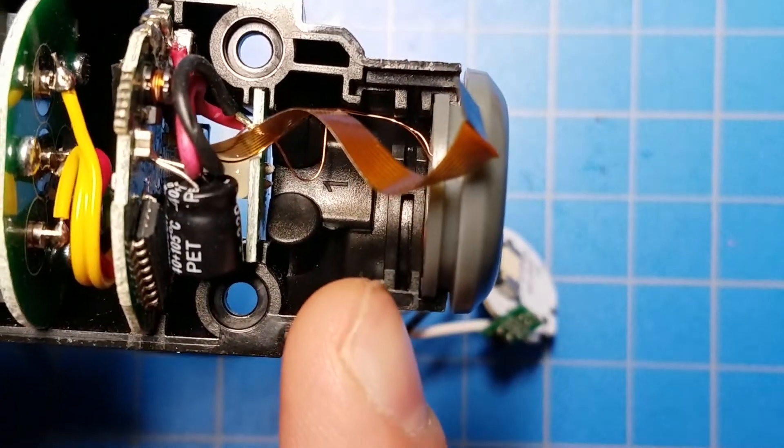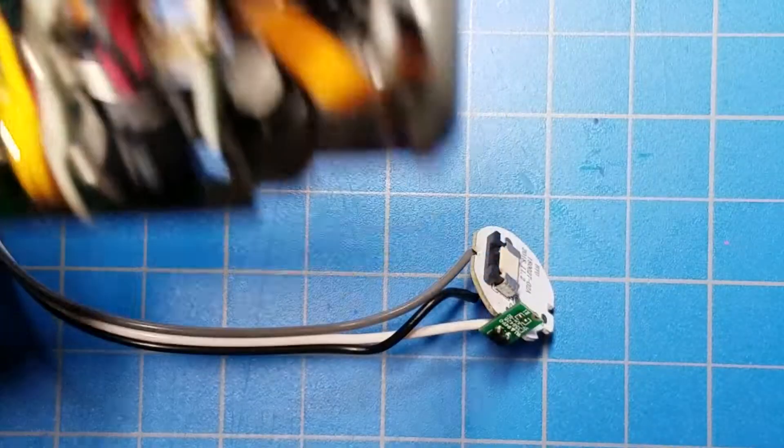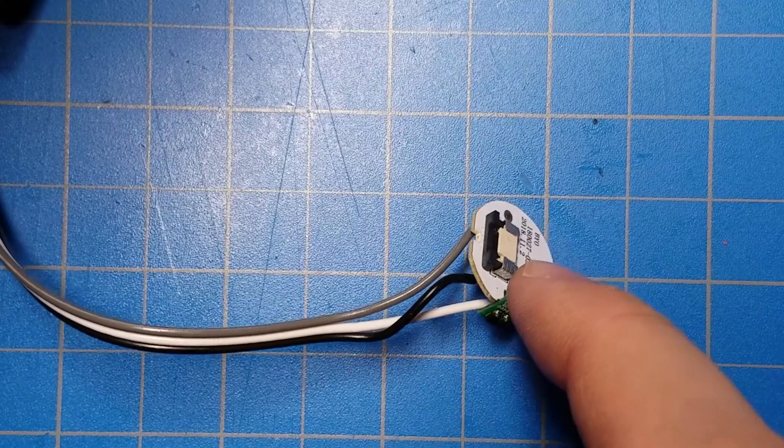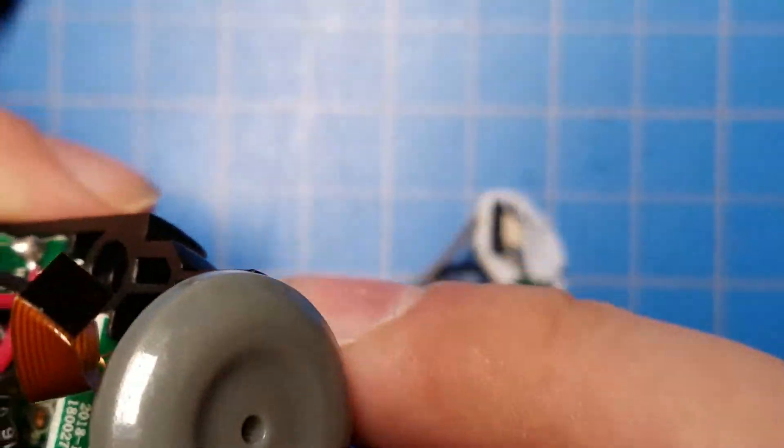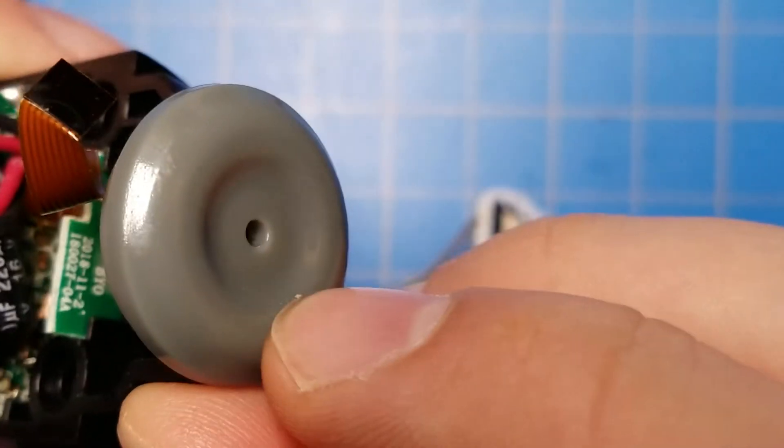It would normally go right here and that ribbon cable would normally connect into that ribbon cable connector there. This little gray piece might be familiar to you.